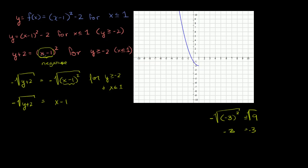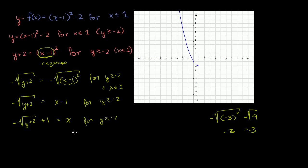We don't want the positive version, which would have been (1 - x). So now we just have to solve for x. Add 1 to both sides: -√(y + 2) + 1 = x, for y ≥ -2. Or rewriting: x = -√(y + 2) + 1, for y ≥ -2.